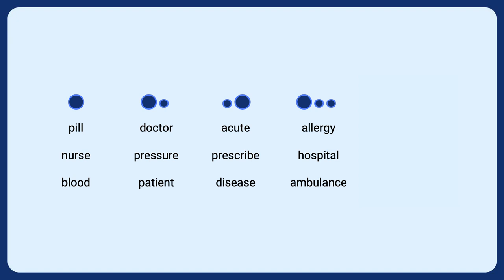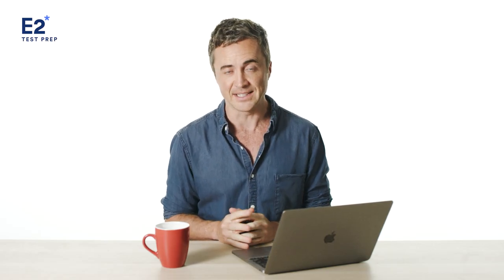Then you have three-syllable words like 'allergy', 'hospital', 'ambulance' where the stress is on the first syllable. And words like 'allergic', 'reaction', 'discomfort' have emphasis on the middle syllable. This type of word stress is particular to English — in your first language you may also use word stress like this, or your language might just stress the first syllable of all words, or have equal stress on all syllables.